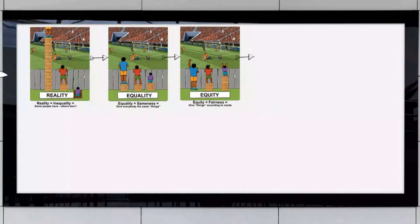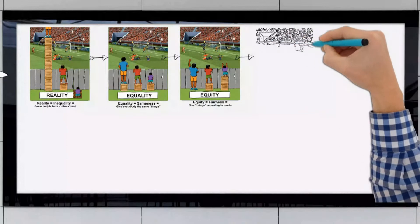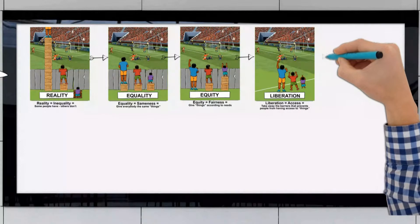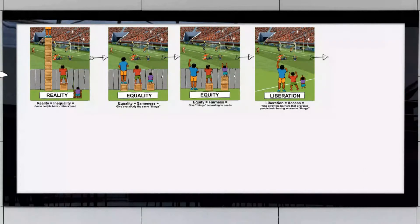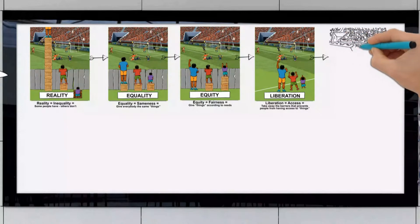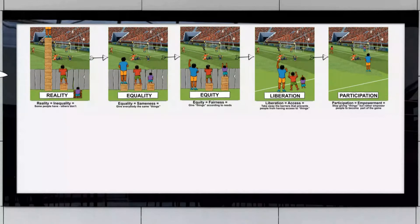The second basic goal is liberation, where you will eliminate the barriers that prevent people from gaining access to the things that they require. This is typically achieved through social action, community education, and social marketing as models. It aims to empower people in such a way that they will become part of the game of life, and not only consumers of goods and services. This is mostly achieved through community development.